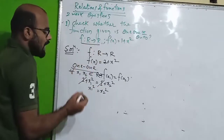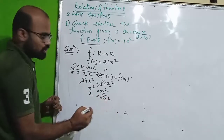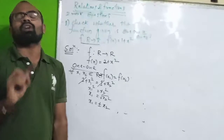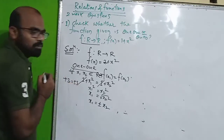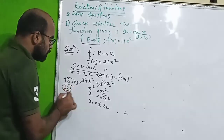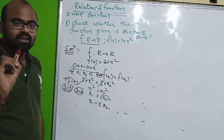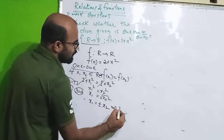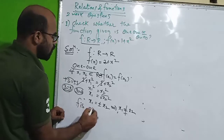Since the domain is R to R, x1 equals the square root of x2 squared, which gives both positive and negative values. So x1 is equal to plus or minus x2. For example, plus 3 equals plus or minus 3, meaning plus 3 could equal minus 3 — but that is false. So x1 is not equal to x2, and therefore f is not one-one.